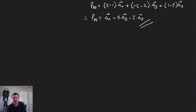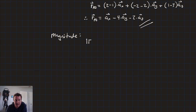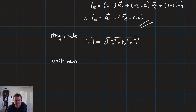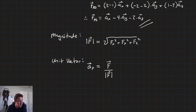That's how we compute a vector that connects two points that aren't the origin. What if we need to figure out the magnitude of a vector? The magnitude of vector f is given by: magnitude of f equals the square root of f_x squared plus f_y squared plus f_z squared. And if we want to find a unit vector in the direction of f — call it a_f — that's just the vector f divided by the magnitude of f.